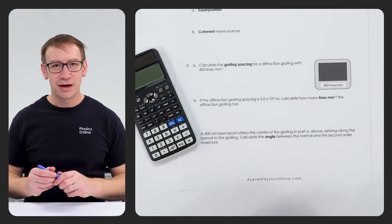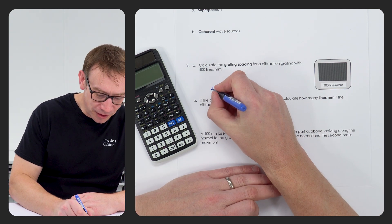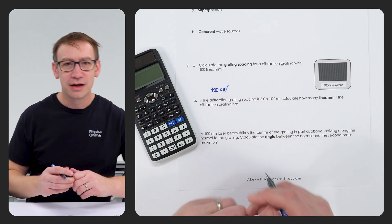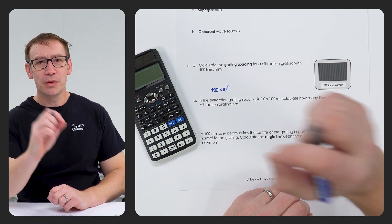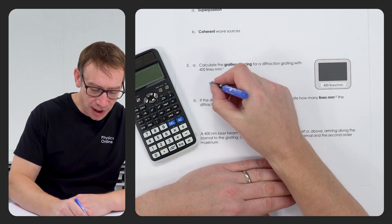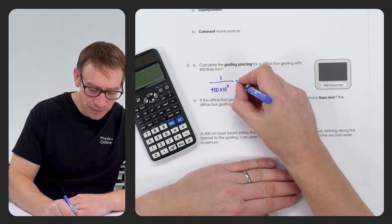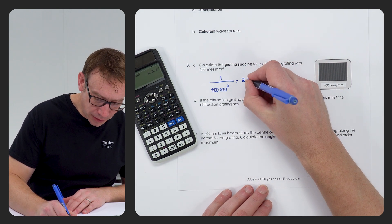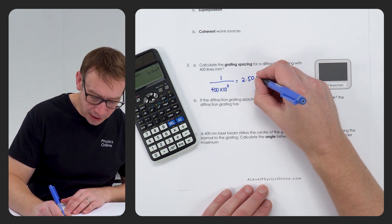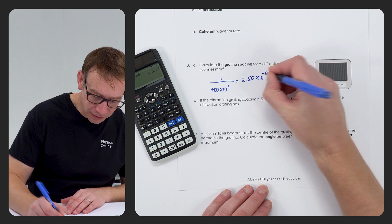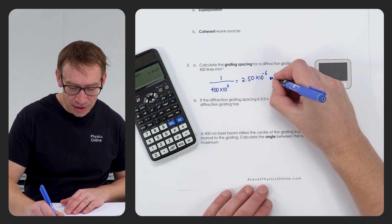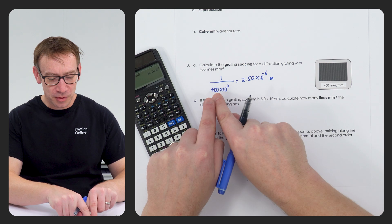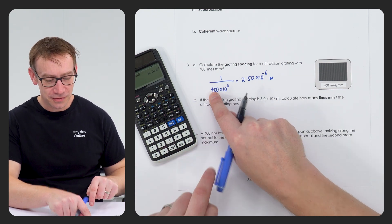If there are 400 lines per millimetre, then that means there's going to be 400 times 10 to the 3 lines per metre. But we want to know the distance between each one, and therefore we're going to take the reciprocal of that, which gives you an answer of 2.50 times 10 to the minus 6 metres. I've given that to three significant figures because we've been given this data to three significant figures as well.